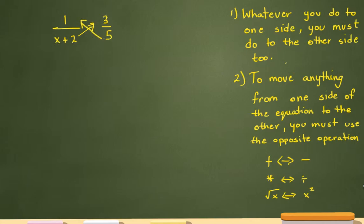So when I multiply x plus 2 times 3, I have 3 times x plus 2, and I have to multiply this 5 by the 1, which will just give me 5 times 1, 5. I need to distribute the 3 here, distribute the 3 here as well, which leaves me with 3x plus 6 equals 5.